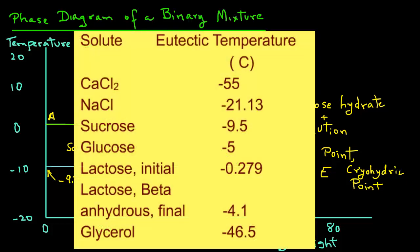This table shows the eutectic temperature of some of the solutes, both inorganic and organic. Note that calcium chloride has a very low eutectic temperature of minus 55 degrees Celsius, whereas salt, sodium chloride, is about minus 21 degrees Celsius. Sucrose is minus 9.5 and so on.